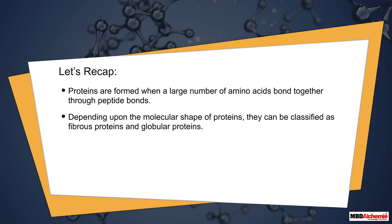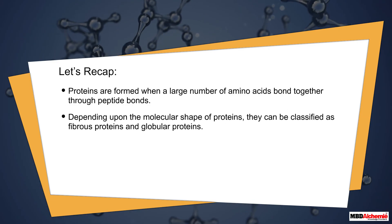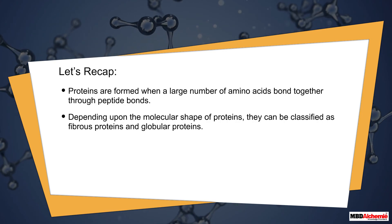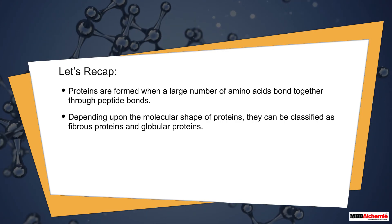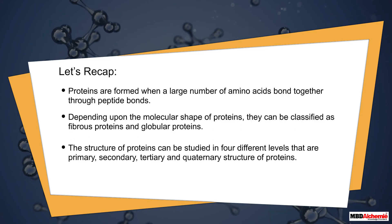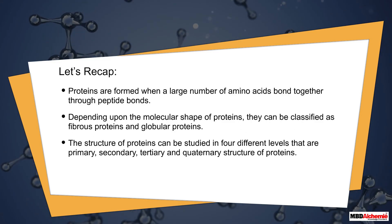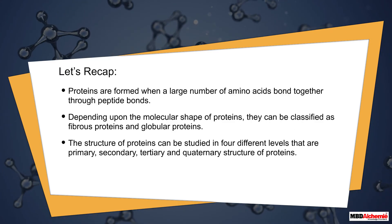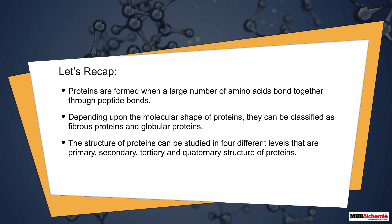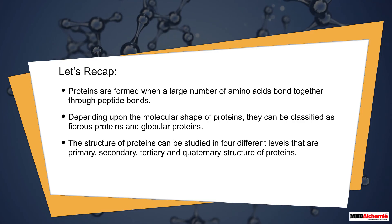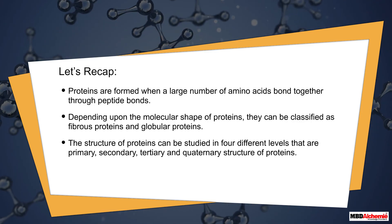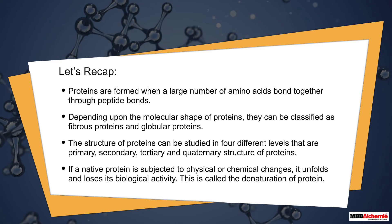Let's recap. Proteins are formed when a large number of amino acids bond together through peptide bonds. Depending upon the molecular shape of proteins, they can be classified as fibrous proteins and globular proteins. The structure of proteins can be studied in four different levels: primary, secondary, tertiary, and quaternary.